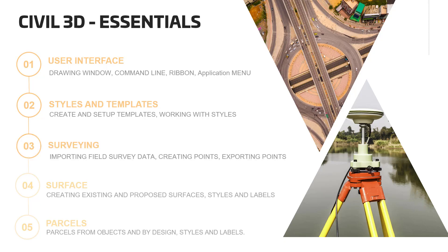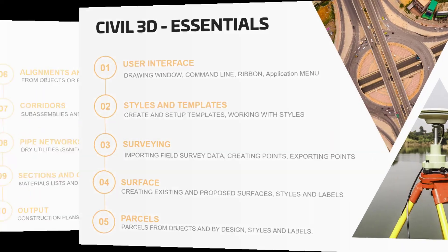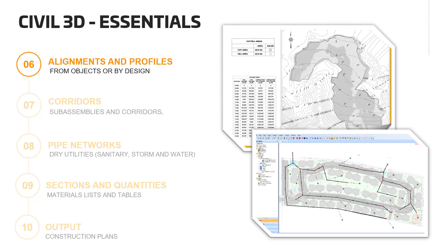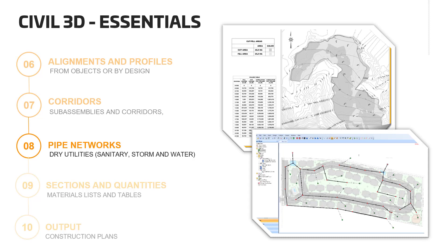After that, we will learn about surfaces and how to create, modify, and annotate them. We will also learn how to subdivide a land, then we will kick off the roadway design portion of the course by learning how to create alignments and profiles, then an assembly or cross-section. An alignment and a profile are brought together to create corridors. Next, we will learn how to design wet utilities, such as sanitary and stormwater sewers. When the detail design is completed, we need to estimate the project quantities by using material lists.